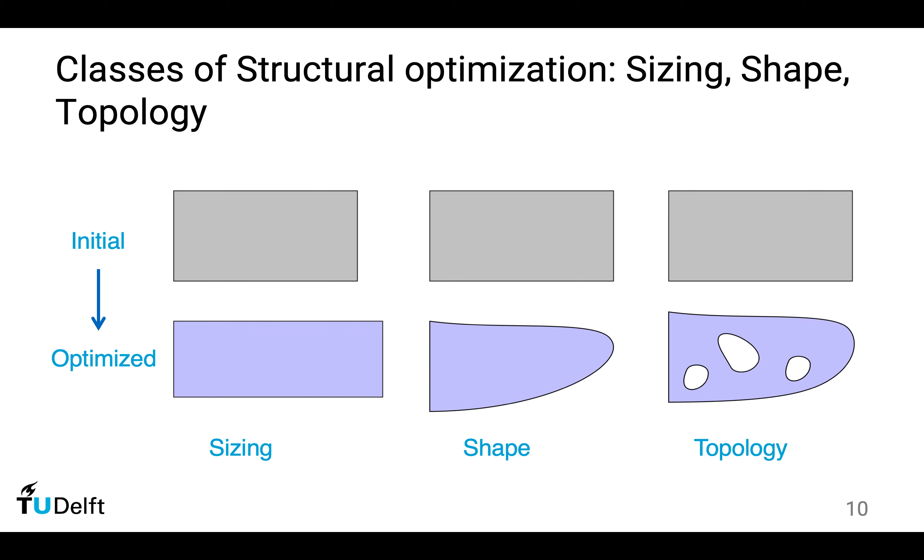Alternatively, you can modify the outer geometry as shown in the middle. You modify the boundary and make it curved, and this is called shape optimization.